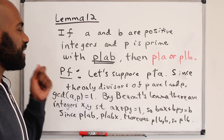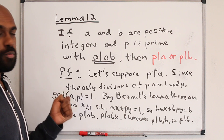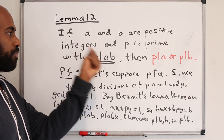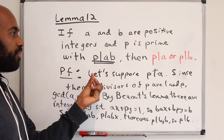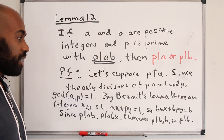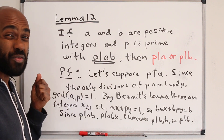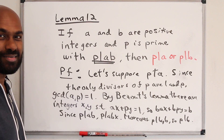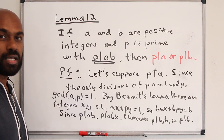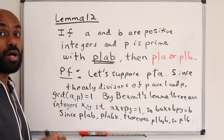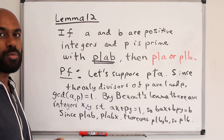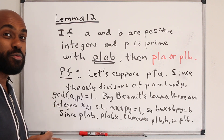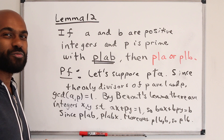So we have our key building block: if a prime divides a product of things, it has to divide one factor or the other. Bezout's Lemma was at the heart of this. Now let's use this to establish the Fundamental Theorem of Arithmetic, which says any positive integer can be written as a product of primes.